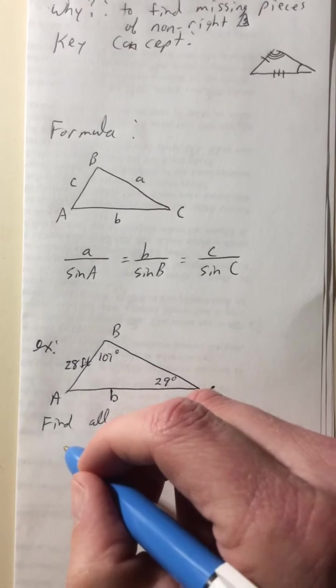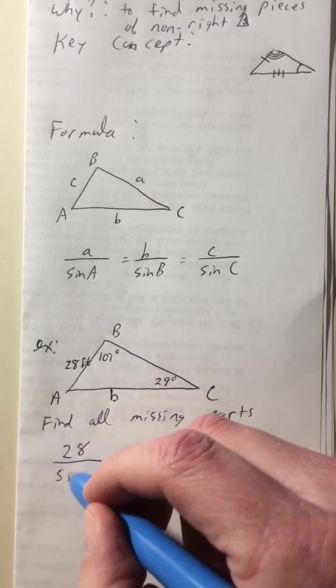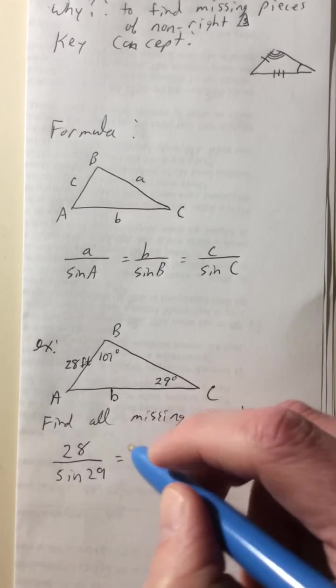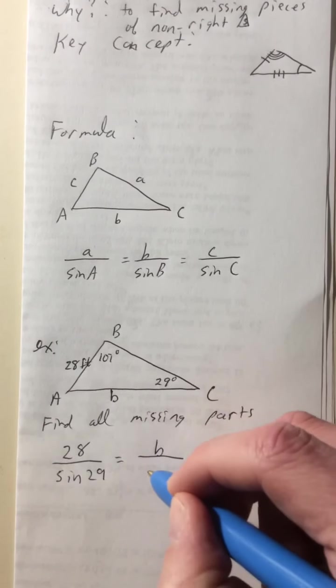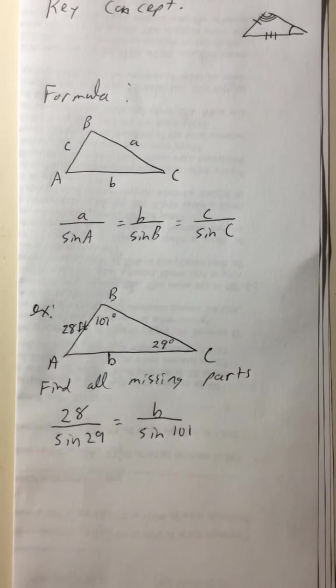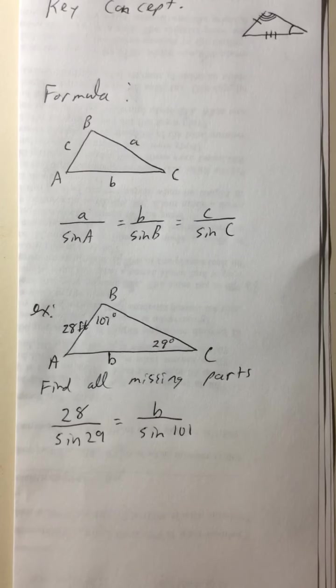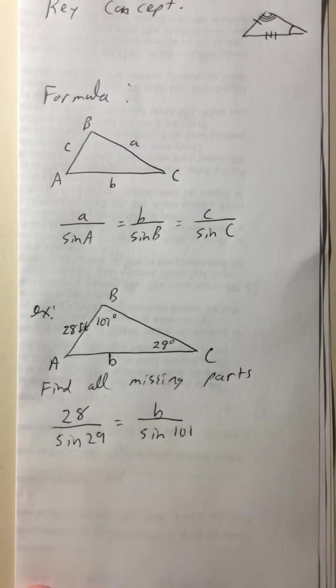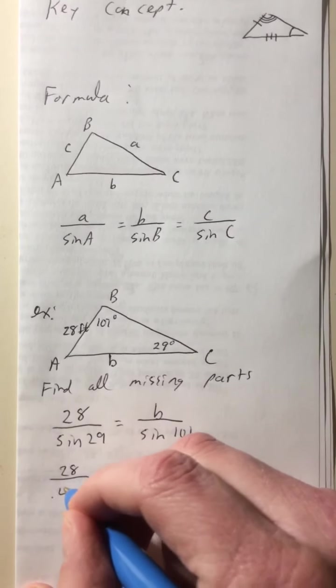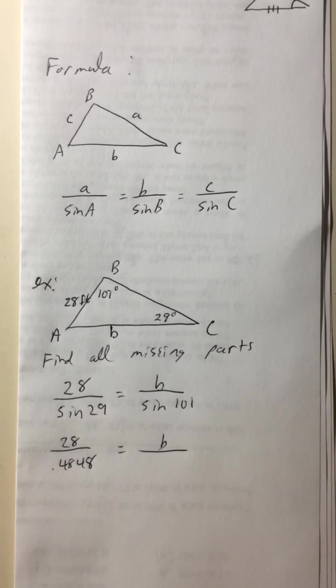So we're gonna set up our little proportion that we have. So we're gonna have 28 over the sine of that angle, sine of 29. And that's gonna be the same as B, which we don't know, over the sine of 101. So we just get our calculators out. Oh, by the way, these are all in degrees, by the way. So no more radians for us right now. So we're only gonna be in degrees. So sine of 29, I'll just put all these things down there. Sine of 29, 0.4848.